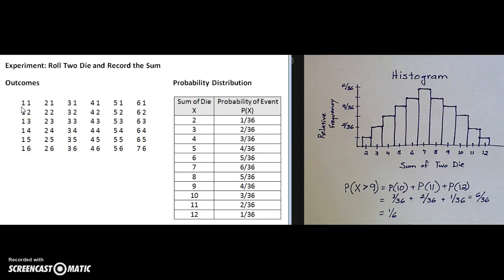All the possible outcomes of rolling two dice are listed in this tabular form. We can see that when we roll a 1 and a 1 we get a sum of 2, and that's the only way to get a sum of 2.